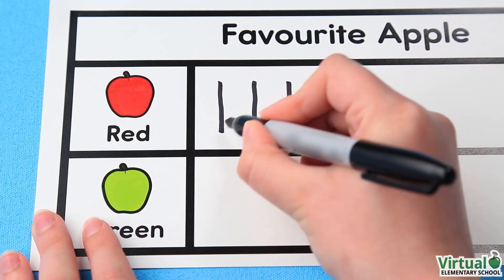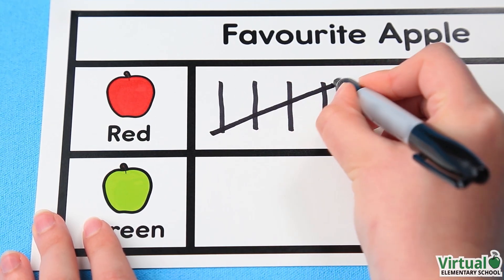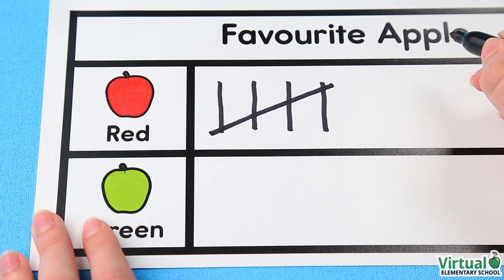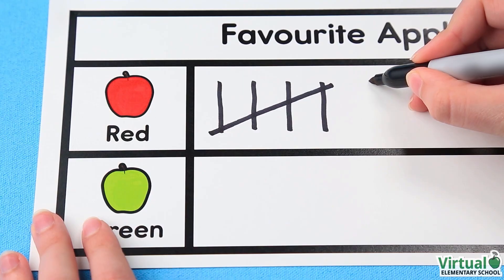Every 5th mark, we draw a line through the other 4. This makes the tally marks easier to count. We then start a new group of 5.